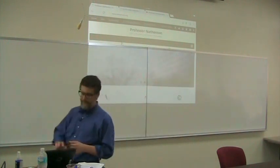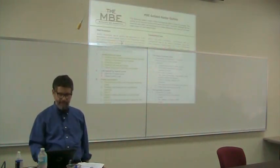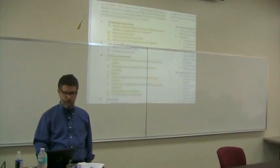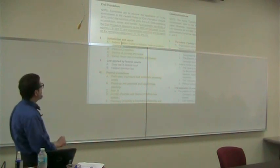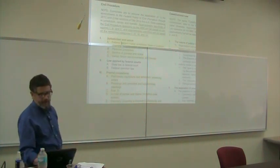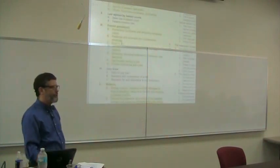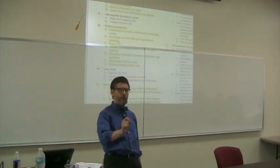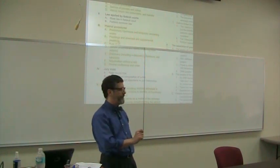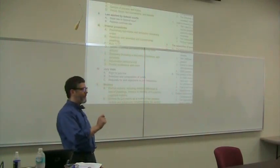Without further ado, I'm going to pull up the MBE outline from the MBE site and give you a sense as to how things will be weighed on the MBE bar exam regarding civil procedure. What they tell us is that parts one, three, and five of the outline on civil procedure will constitute two-thirds of the questions on the MBE. There are going to be 27 questions total on civil procedure, so the topics covered in parts one, three, and five will be 18 of those questions — two-thirds.